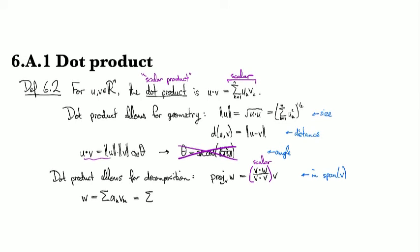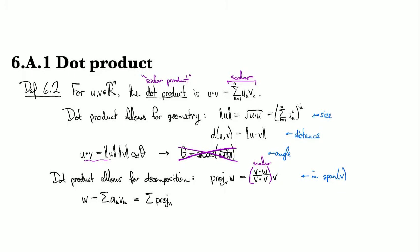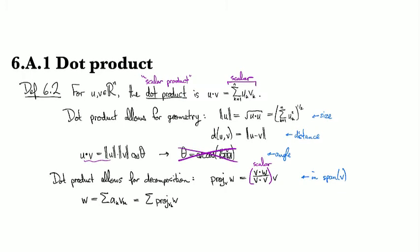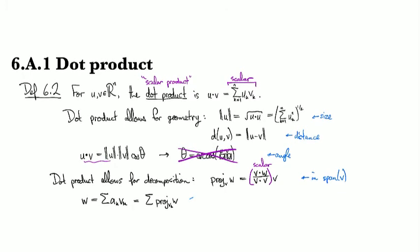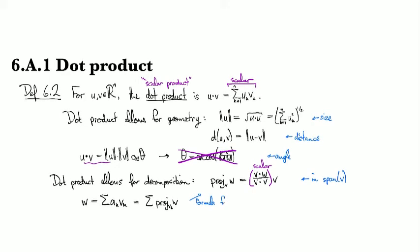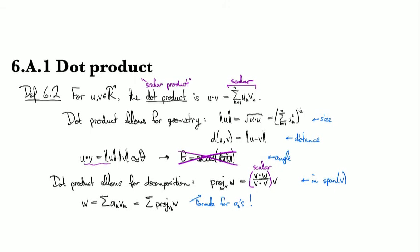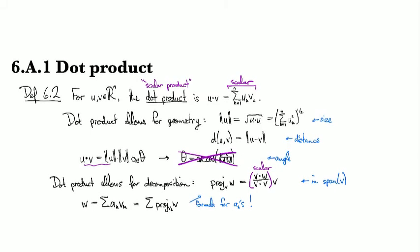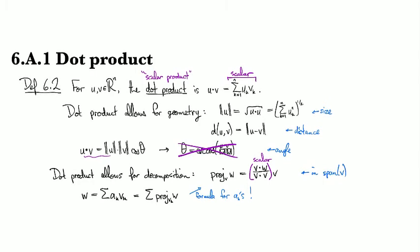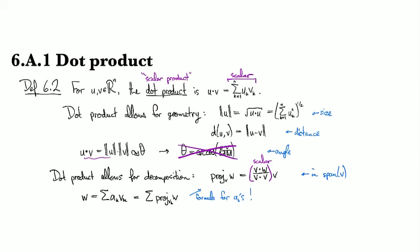But if those vk's form a nice basis, called an orthonormal basis, which we'll talk about soon, then we can figure this out just as the projection onto the vk's of w. And so then all of a sudden there is a formula for the ak's. And that makes everything very nice and friendly and simple and allows us to do stuff even in infinite dimensional spaces that otherwise would never be possible.